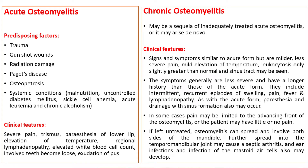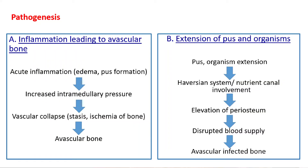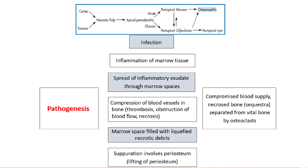In the chronic form, all these symptoms will be milder. In osteomyelitis, whenever there is pus collection, there is an increase in intramedullary pressure, so the vascular supply is compromised, thereby resulting in osteomyelitis. A very important hallmark of osteomyelitis is the development of sequestra. Periosteal reaction is also seen in some types, but it is not the pathognomonic feature.